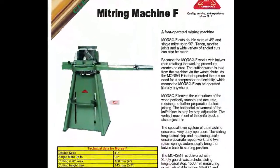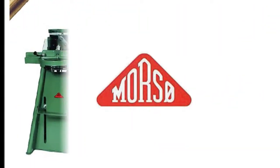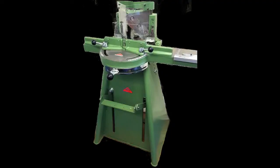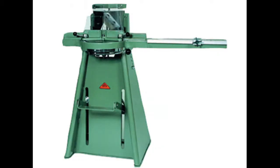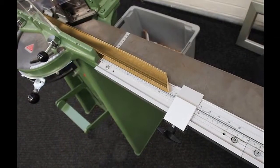The Morso F from Danish manufacturer Danlist is the world's most popular picture framing guillotine. New models are supplied complete with a waste chute that directs the wedge-shaped waste into a bin, or maybe onto the floor if you've not got a bin.